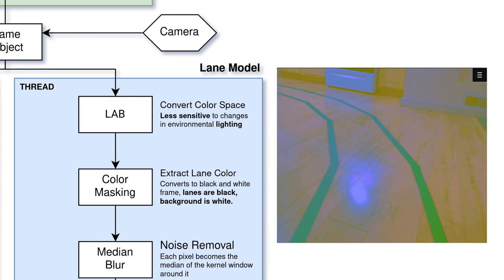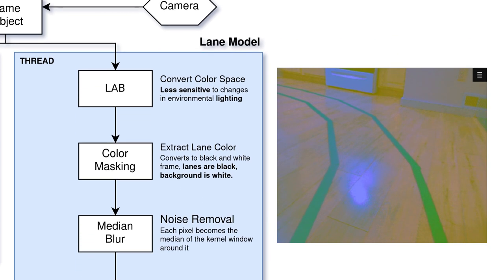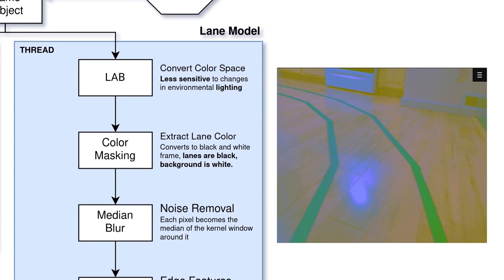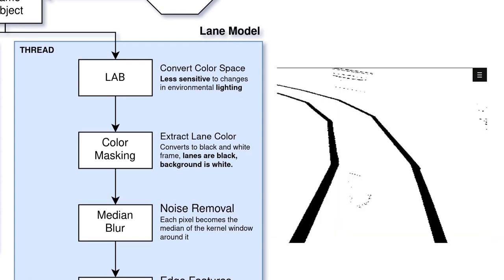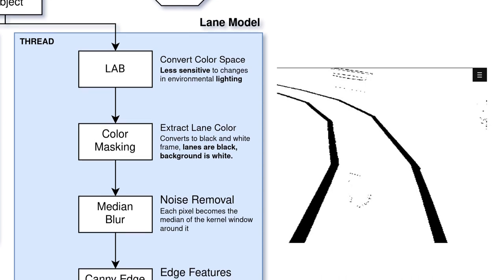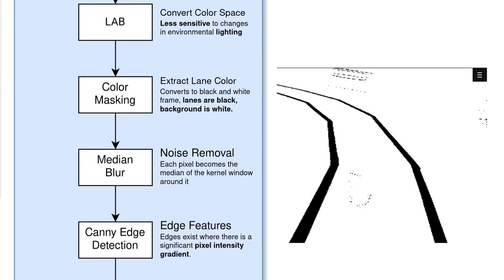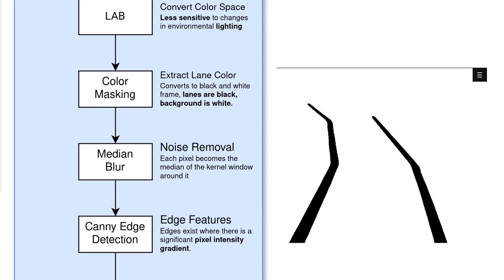We are using blue painter's tape as lane lines, so we pass the LAB frame into a masking operation which creates a black and white frame, where the lane lines are masked out as black and the background as white. The masked frame typically has noise. We use a median blur to reduce the noise. Median blur slides a small window across the frame and for each pixel, replaces it with the median of the pixel intensities for the window.